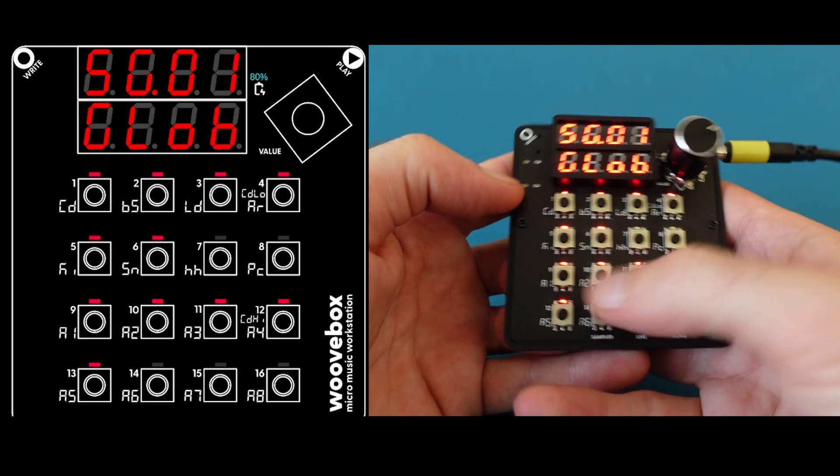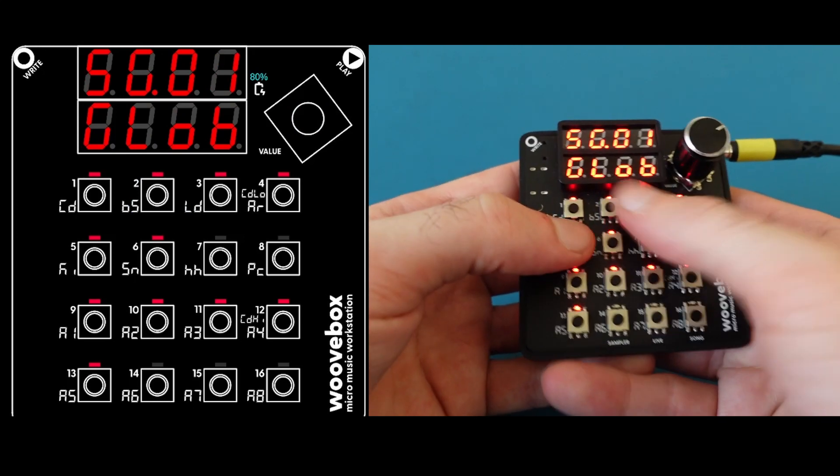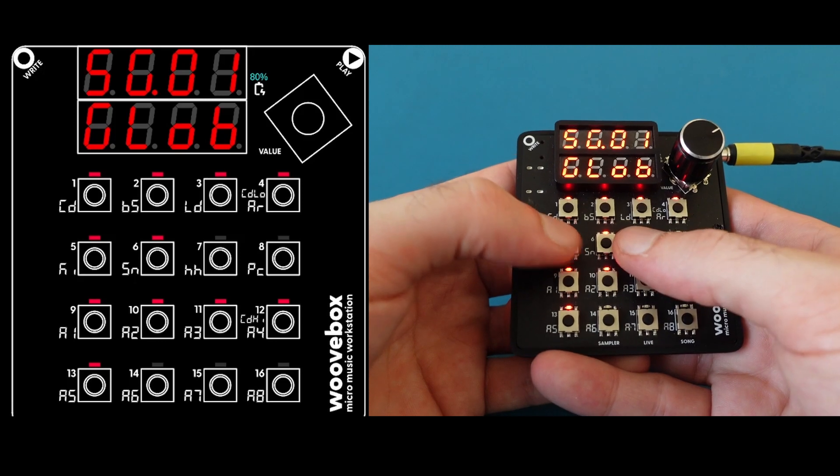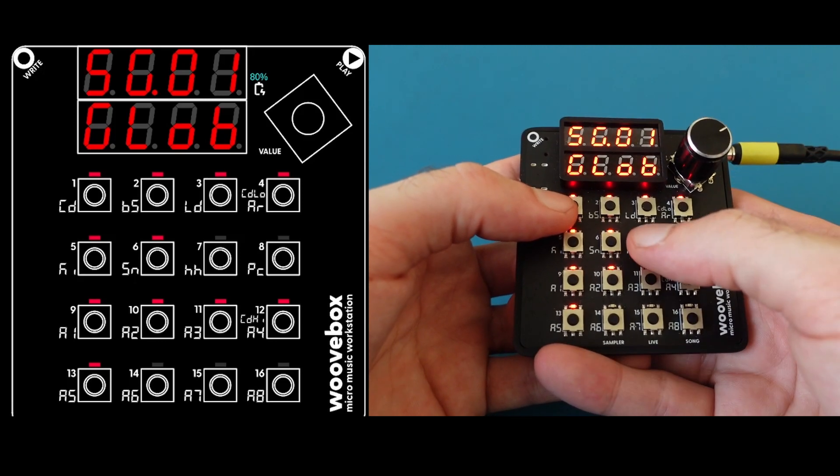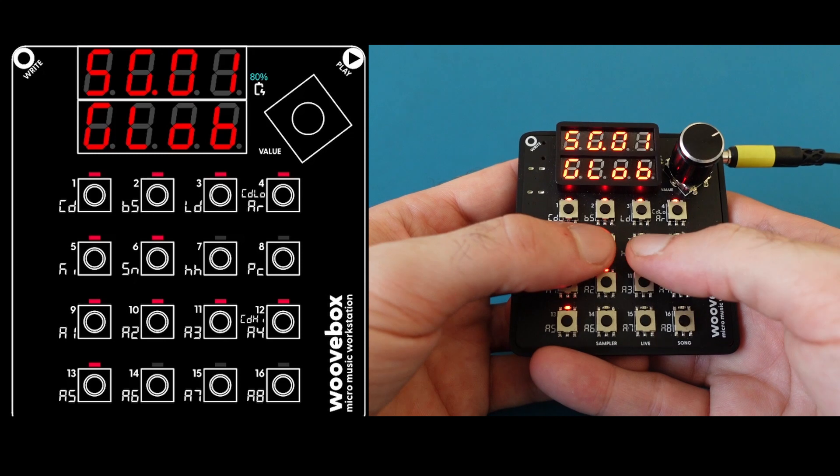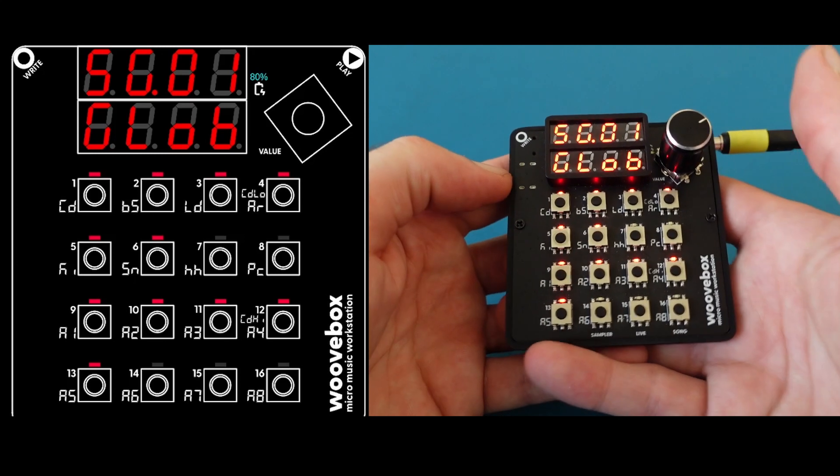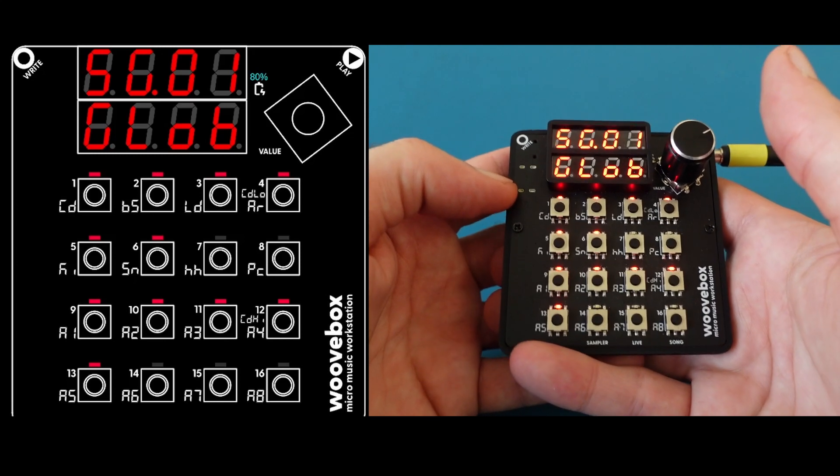The Woof Box has 16 tracks, one chord track and 15 other tracks that can be pretty much anything except for a chord track. They can be paraphonic tracks. We'll talk about that in another video. But for now, let's just concentrate on making the track.